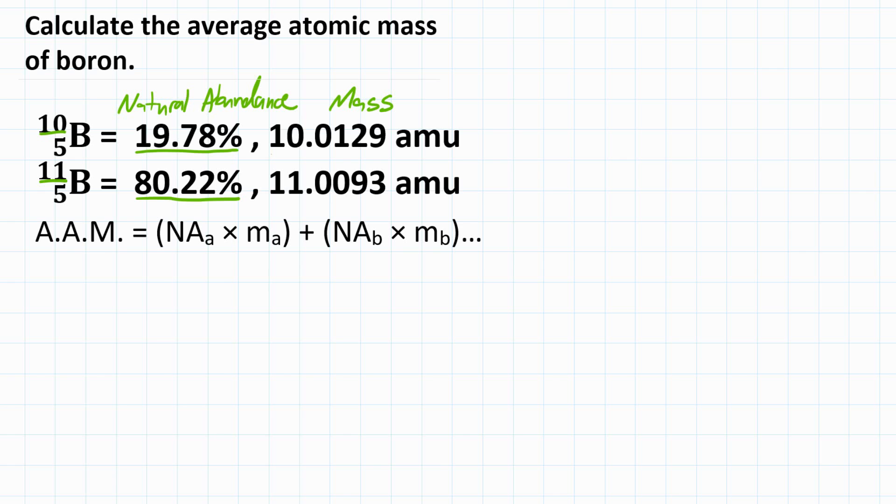For boron-10, the mass is 10.0129 AMUs, or atomic mass units. And then for boron-11, the mass is 11.0093 AMUs.